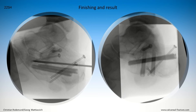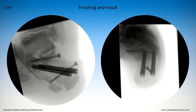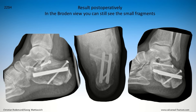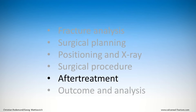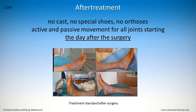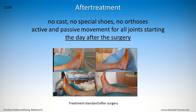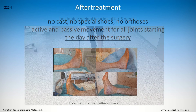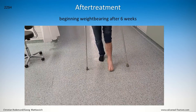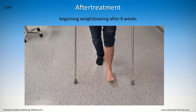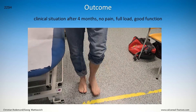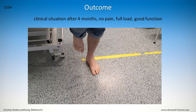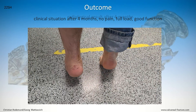We finished by placing the sustentaculum screw, two large static screws, and one tuber screw. If you look carefully, you can see the small fragment visible in the mortise view. For aftercare we used no cast, no special shoes, and no orthosis. We started active and passive movement for all joints the day after surgery. Mobilization with crutches began, with weight bearing starting after 6 weeks. The clinical outcome was very satisfying: no problems with full load, good function, no pain, stable bony healing, and a good reduction.